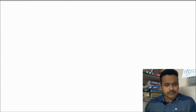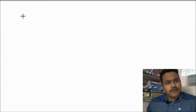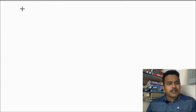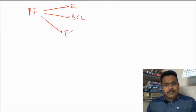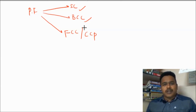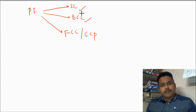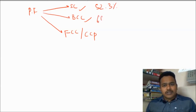In this video, we are going to learn about the packing fraction of FCC or CCP. We studied packing fraction for simple cubic, for BCC, and for FCC — otherwise also called CCP. We discussed this in the last videos; you can watch the previous videos. For simple cube, we got 52.3%, and for BCC we got 68%.